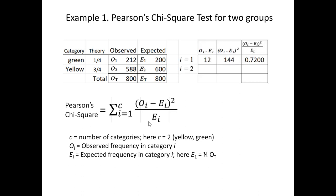For the first category, the observed was 212 and we expected 200. The difference is 12; squared, that's 144. 144 divided by 200 is 0.72. For the second category, the discrepancy is negative 12, giving 0.24. Adding those together, we get 0.96. So in our example, Pearson's chi-square statistic is 0.96.